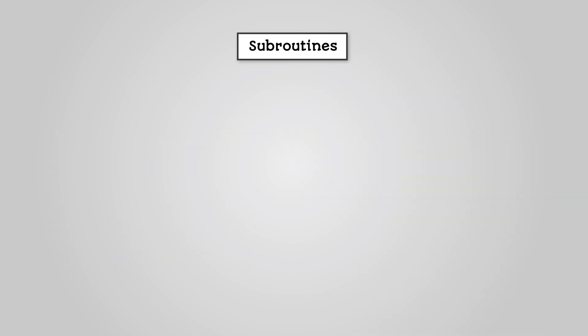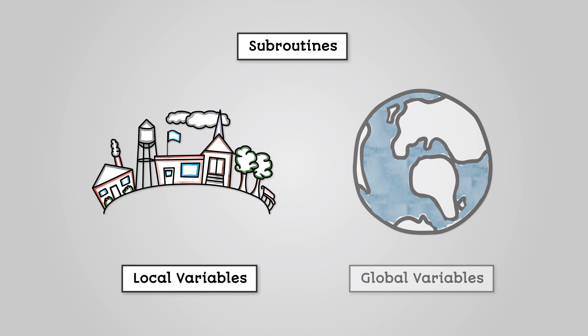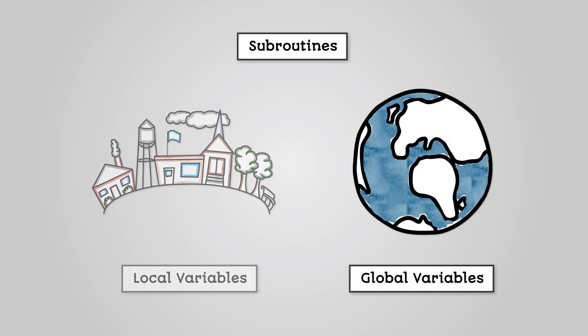When using subroutines it's important that we understand the concept of local and global variables. Local variables are variables that are created in a procedure or function. They are only visible and used in that procedure or function. Global variables are defined in the main program and can be used anywhere. Constants can be local or global too.